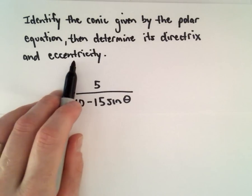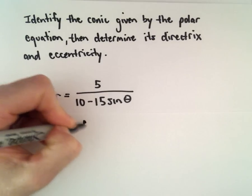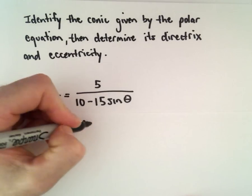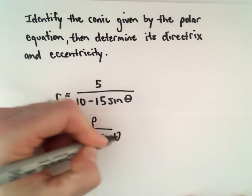To determine what type of conic section it is, we'll first find the eccentricity, and using the eccentricity we can find the directrix. This is almost in the form r equals e times p divided by 1 minus e times sine theta.